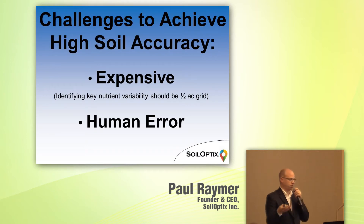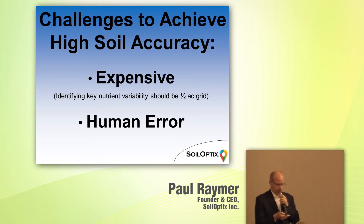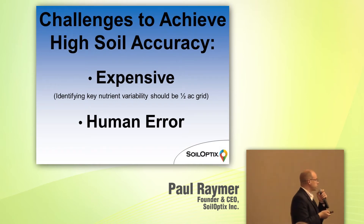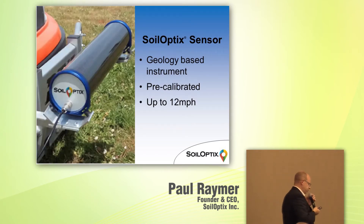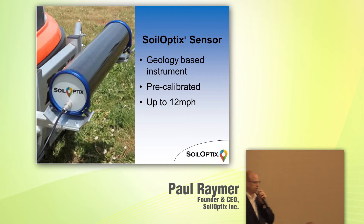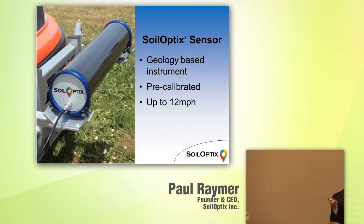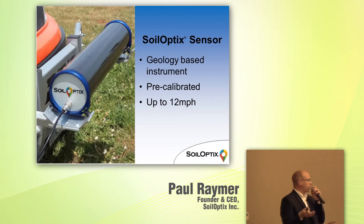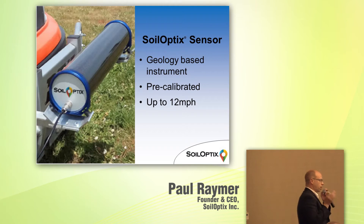When fertility, economic, and environmental decisions are being made, we want as high accuracy of information as possible. So here's our approach: we've got this sensor tube that mounts onto really any type of vehicle, and it's non-contact. It's a geological-based sensor that comes pre-calibrated from the factory. You mount it on whatever vehicle, turn it on, and away you go — traveling up to 12 miles an hour.